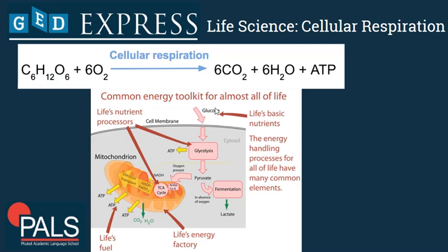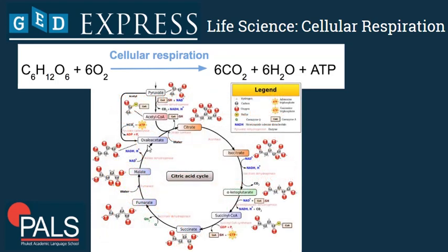The pyruvate that comes from glucose is then slowly broken down into carbon dioxide and water through many step-by-step chemical reactions in the citric acid cycle. The products of these reactions are then used to release and make ATP. It is not just a simple one-step reaction — many enzyme-controlled steps are involved to get our ATP and energy out of the glucose.